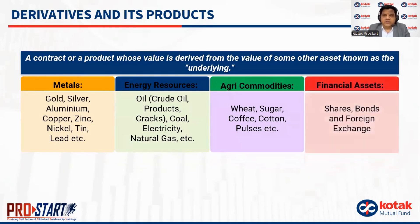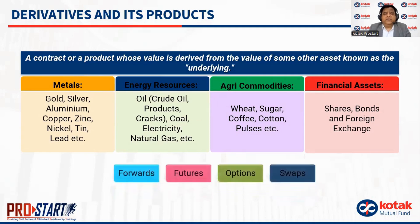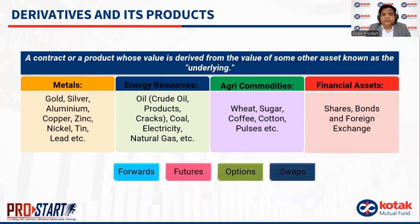And finally, you have the financial assets, which include shares, bonds, foreign exchange and the like. When we look at derivatives, there are more broadly four products: forwards, futures, options and swaps.